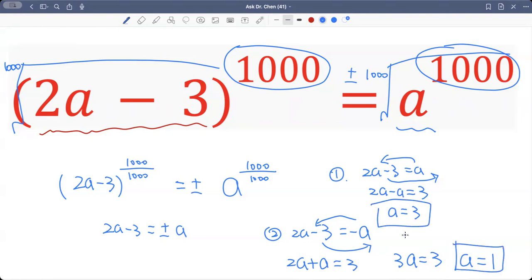a equals 3, a equals 1. Well, let's check. 2 times 3 is 6. 6 minus 3, you get 3. 3 raised by 1000 on the left-hand side. On the right-hand side, 3 raised by 1000. Yes.